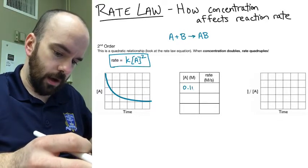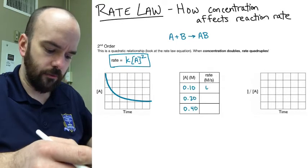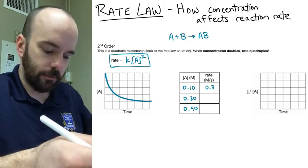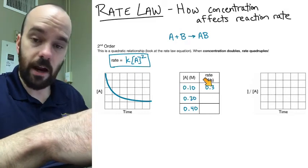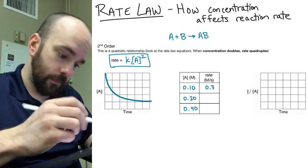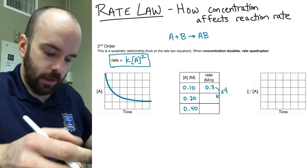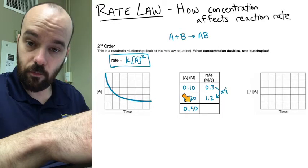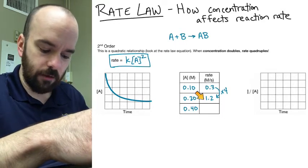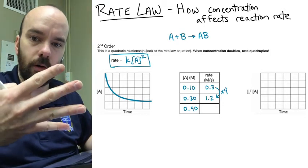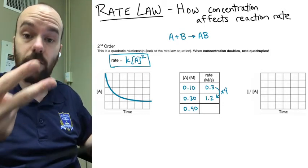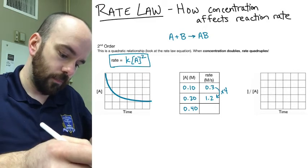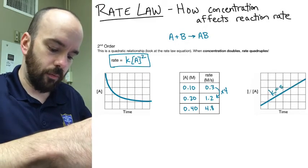Let's look at the data table with concentrations of 0.1, 0.2, and 0.4 molar. Say the rate at 0.1 molar is 0.3 molar per second. If I double the concentration to 0.2, I multiply the rate by a factor of four, giving 1.2 molar per second. Doubling again from 0.2 to 0.4, the rate is again multiplied by four, giving 4.8 molar per second. In first order, doubling the concentration doubled the rate. In second order, doubling the concentration quadruples the rate because it's a quadratic relationship.